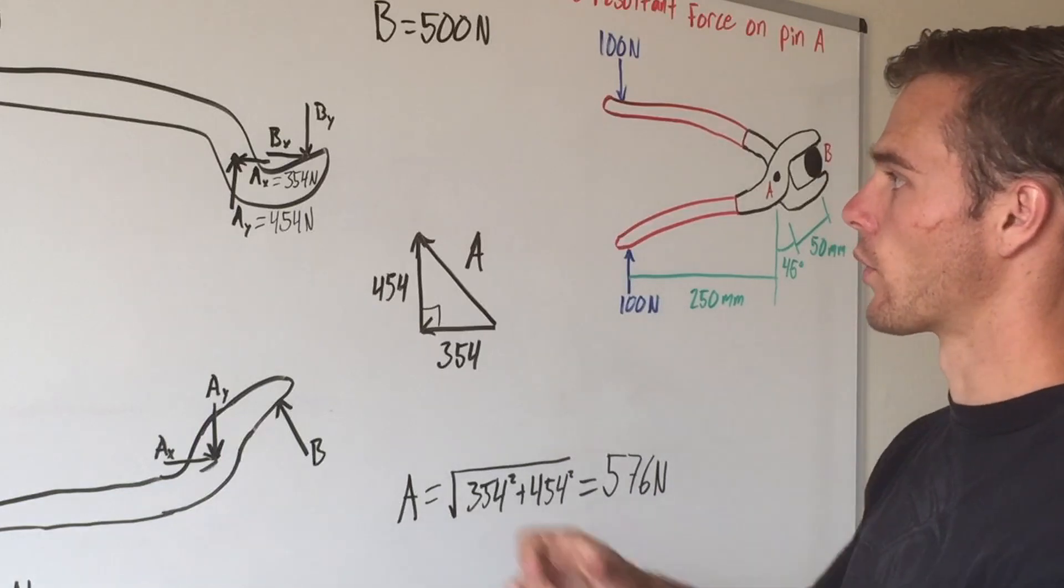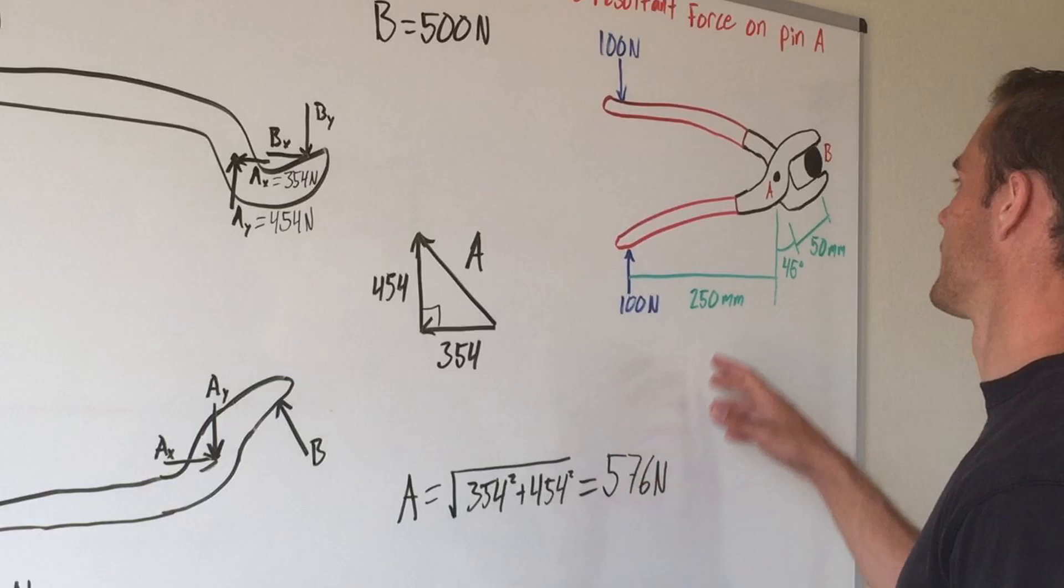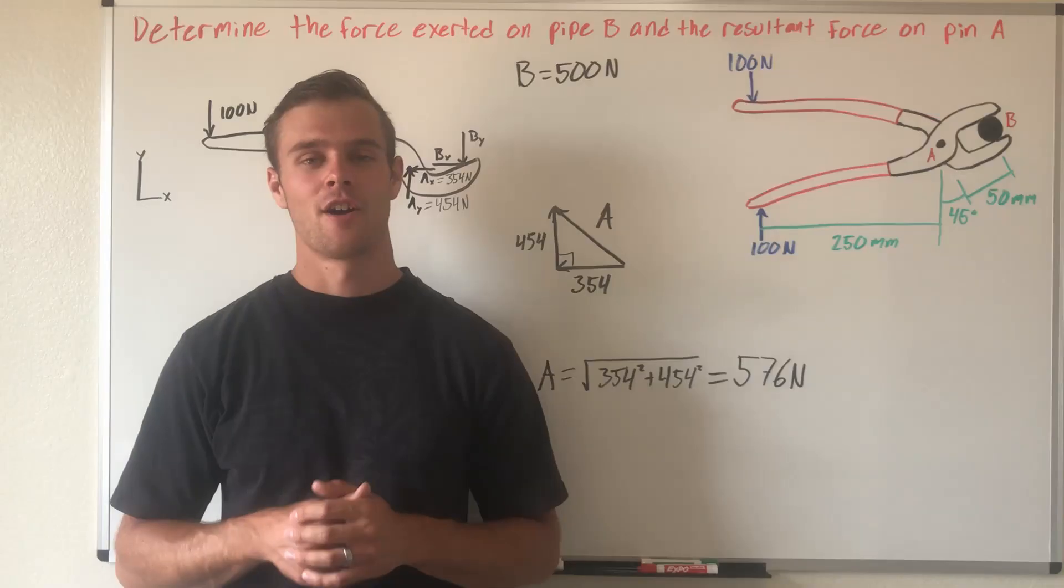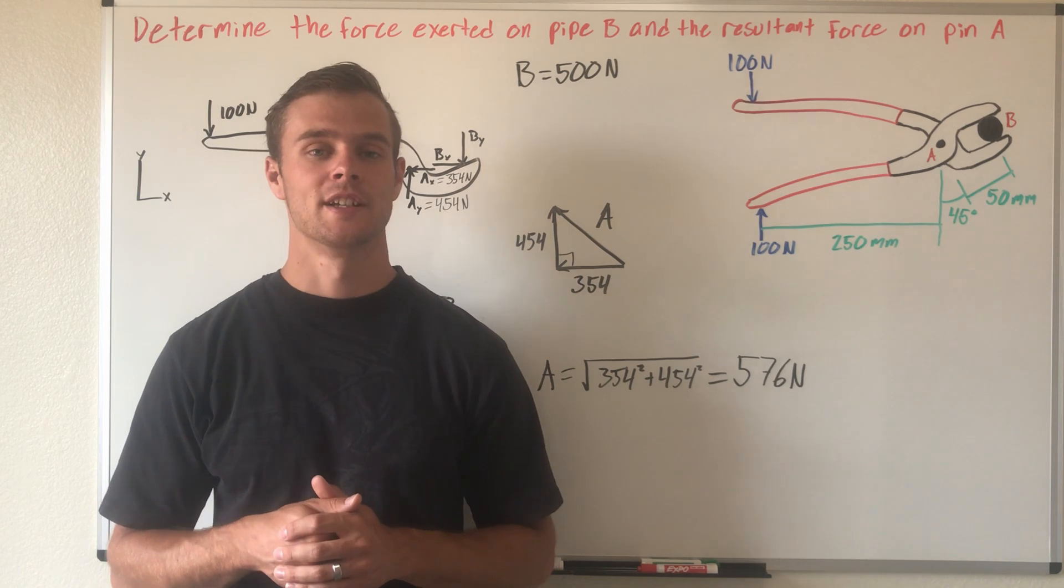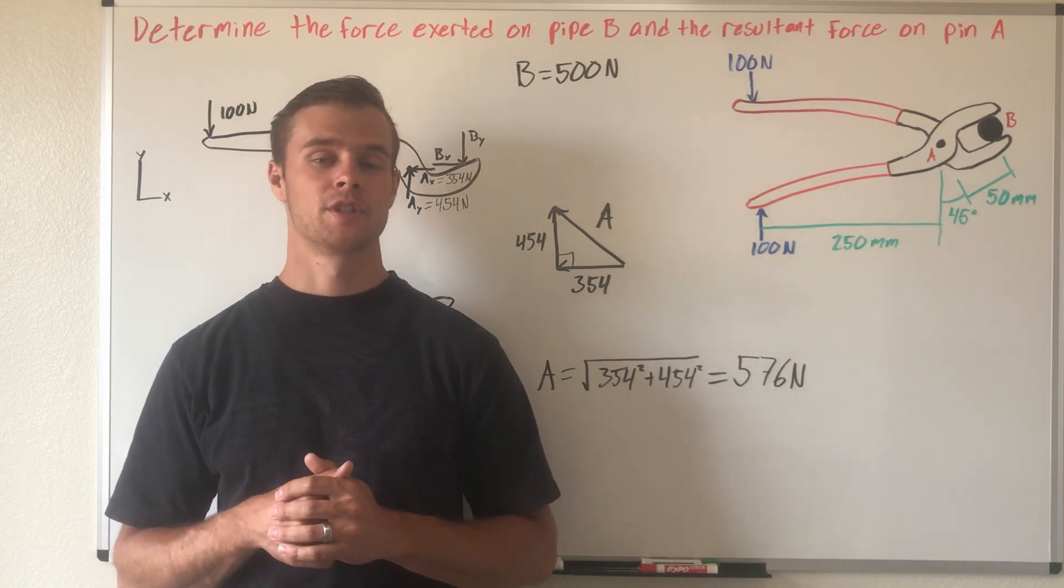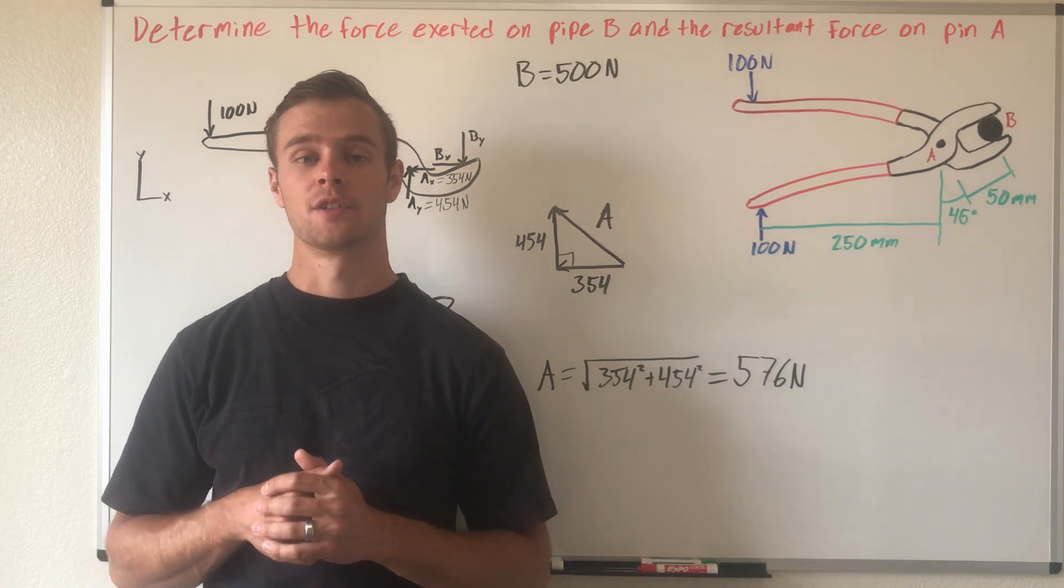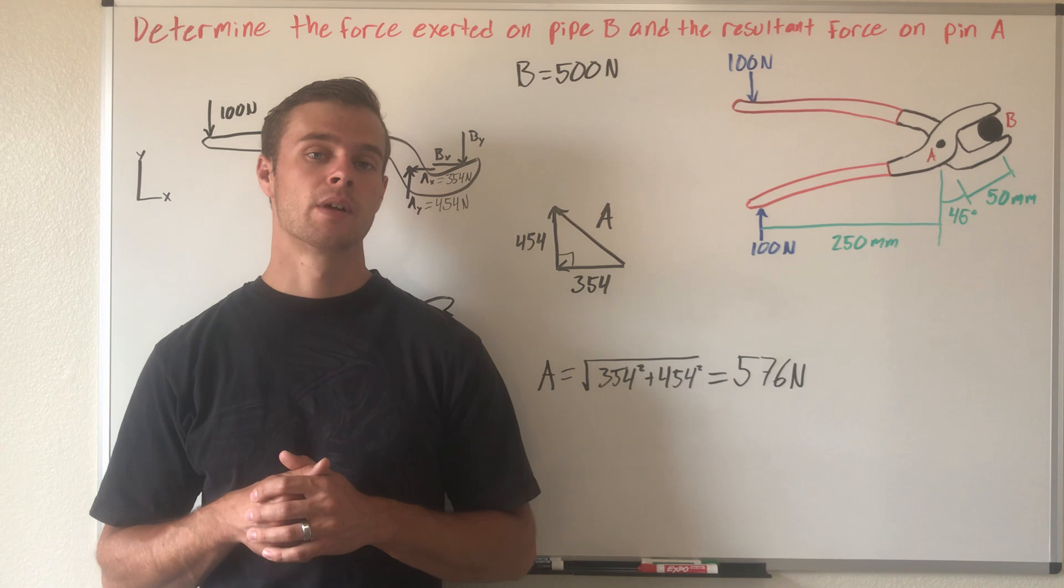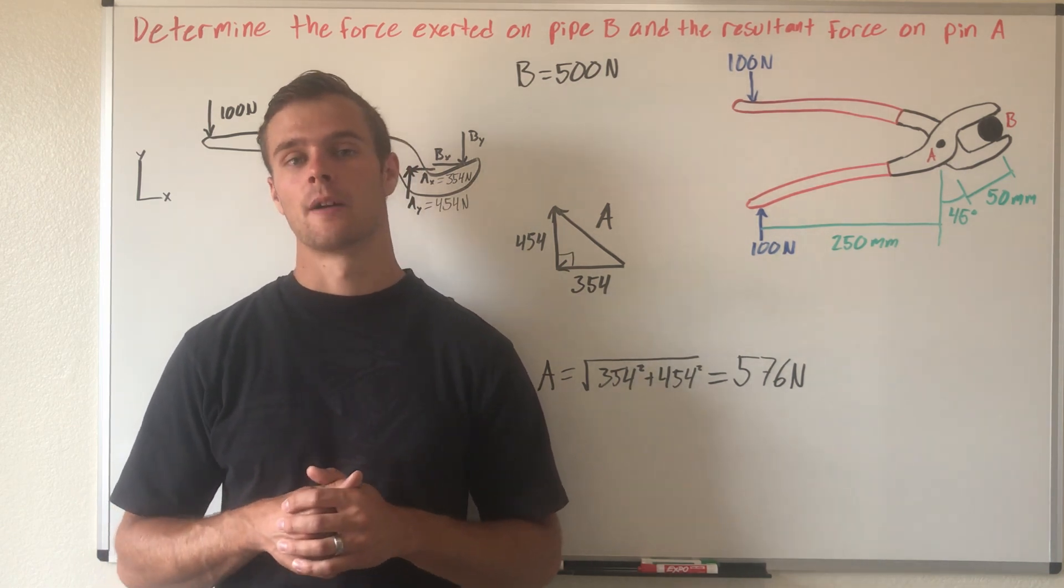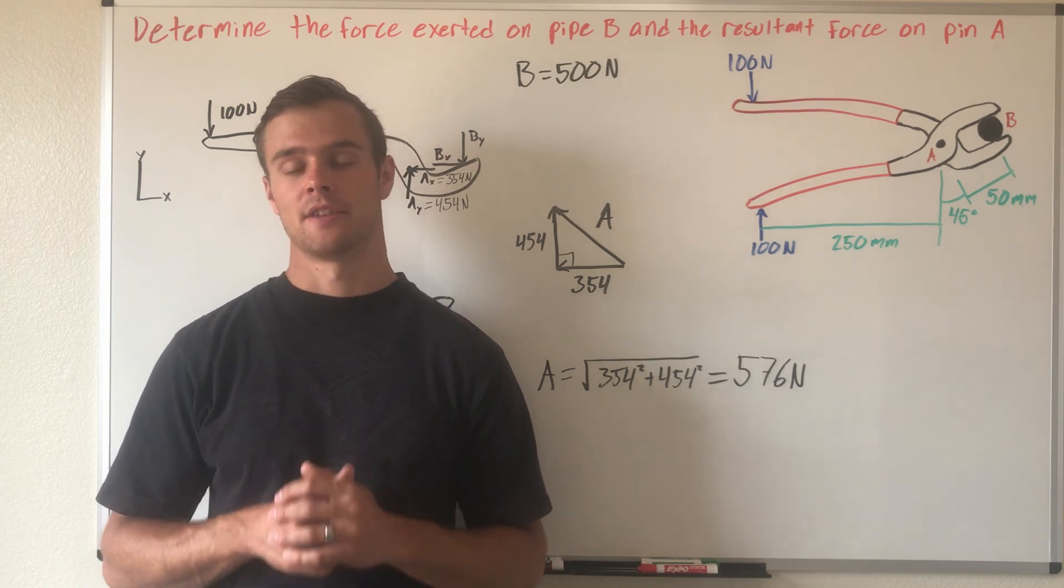So that is the reaction force on pin A. And you'll notice that it is just a little bit higher than what the reaction force is on our pipe B. Alright guys, so that's how you analyze a simple machine. If you want a video explaining the process of analyzing frames and machines, there is a video link at the end of this video. You can check that out. There is also another example problem that is a little bit more complicated than this one going over analyzing another machine, and you can check that out also at the end of this video.